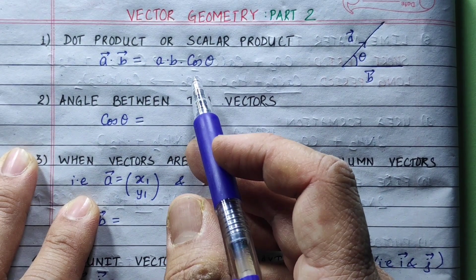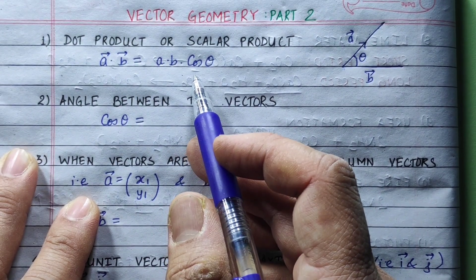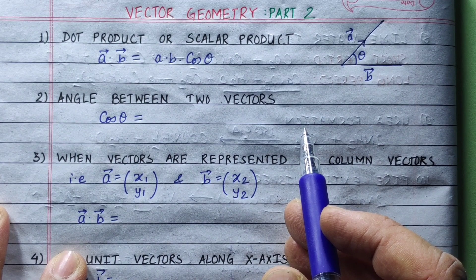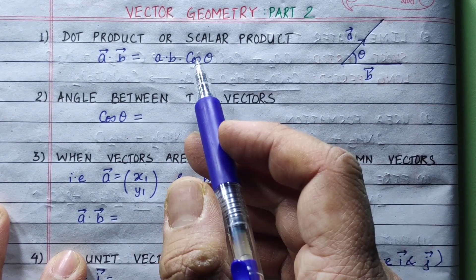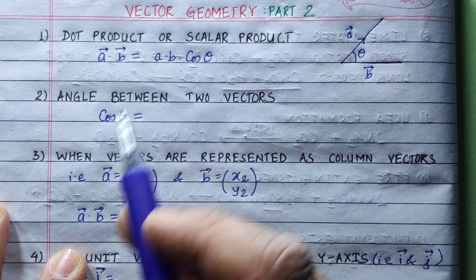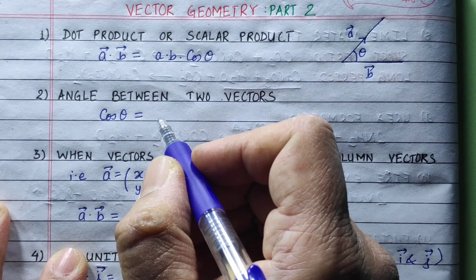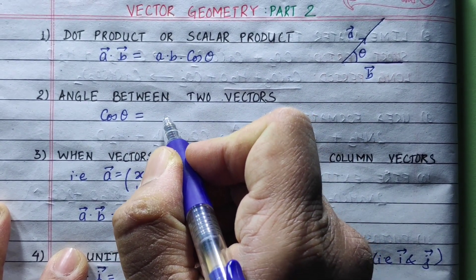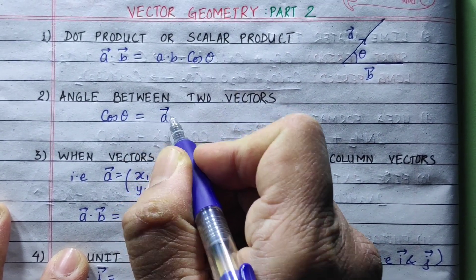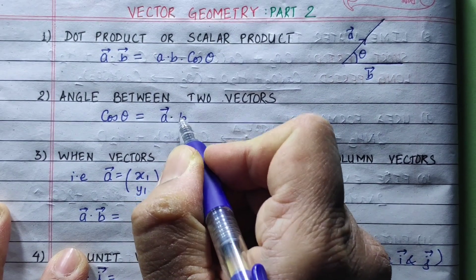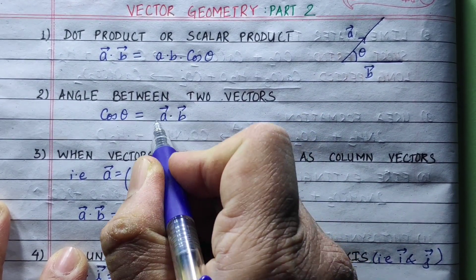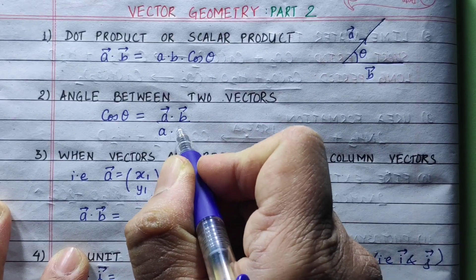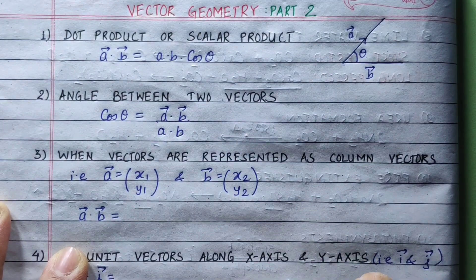Now with this formula, we will talk about the angle between two vectors. We can find cos theta, which equals vector A dot vector B divided by the magnitude of vector A times the magnitude of vector B.